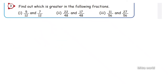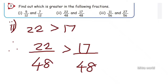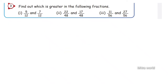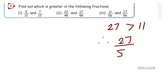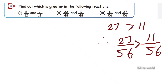Second: 22 by 48 and 17 by 48. The denominators are the same — both are 48. Since 22 is greater than 17, therefore 22 by 48 is greater than 17 by 48. Third: 11 by 56 and 27 by 56. Denominators are the same. Since 27 is greater than 11, therefore 27 by 56 is greater than 11 by 56.